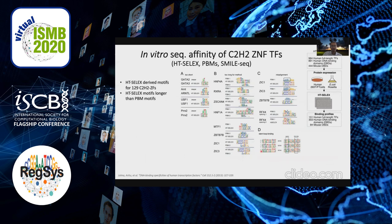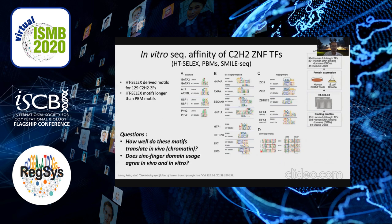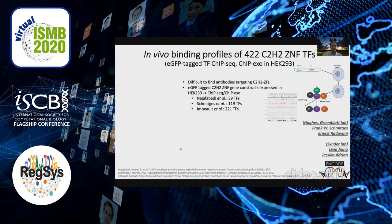There have also been in vitro studies on zinc finger transcription factors such as HT-SELEX, PBM, and SmileSeq. But the issue with in vitro studies is that we do not know how well this would translate to in vivo in the presence of chromatin. It's also not clear if in vitro and in vivo binding would use the same sets of zinc fingers. To understand in vivo binding, you need to do ChIP-seq.